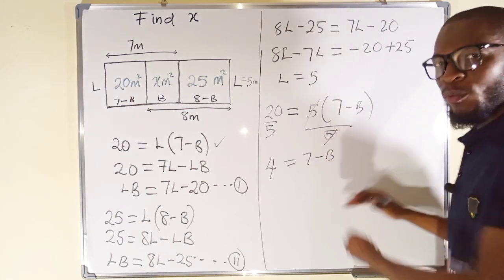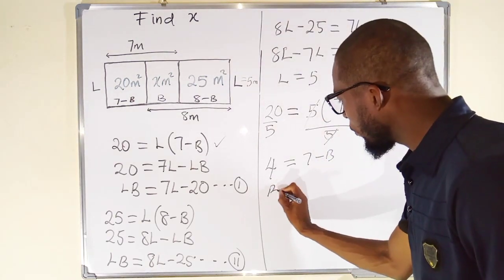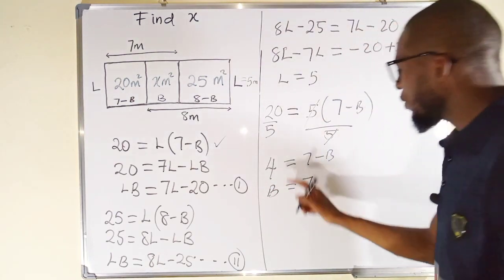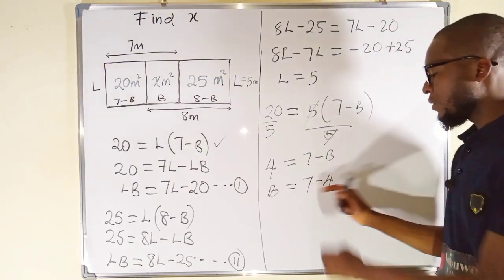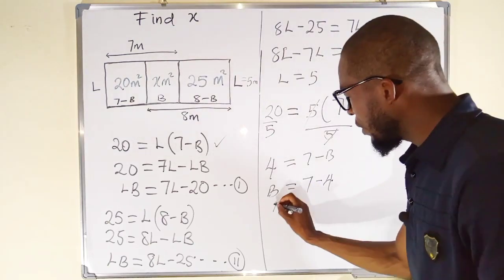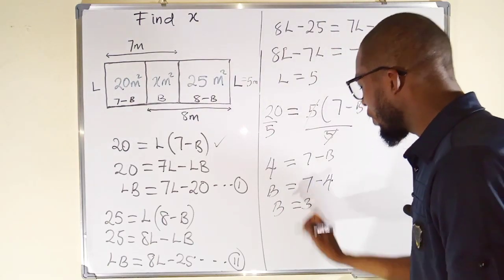B is negative. Coming to the left, it becomes positive. So, we have B here equal to 7. 4 is positive. Crossing over, it becomes negative. 7 minus 4 is 3. And B, finally, is equal to 3.